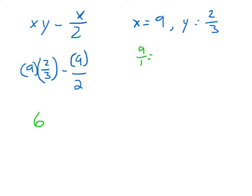If you wanted to see how that works. 9 over 1 times 2 thirds. That will equal 18 over 3 which equals 6.